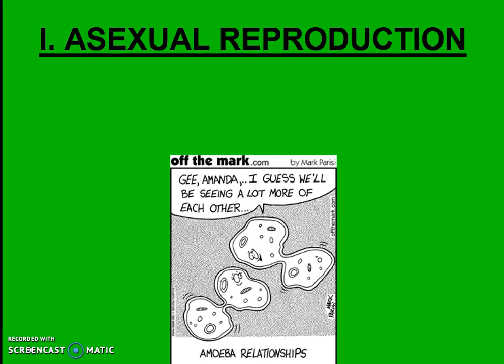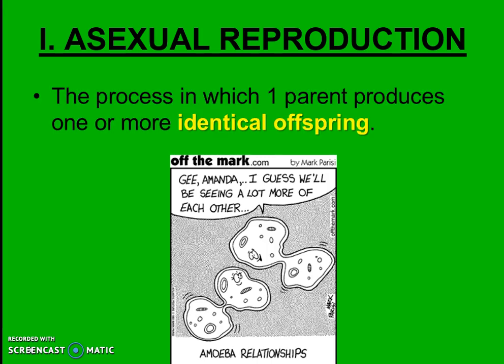First we're going to talk about what asexual reproduction is and what the different types and examples are. Asexual reproduction is the process in which one single parent produces one or more identical offspring. We sometimes call these identical offspring clones. This is often seen in bacteria, and here we have a protist example as well, where an amoeba is just making a copy of itself through mitosis.